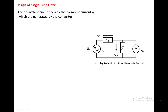Here we are placing the filter. This is the grid, and whenever we consider the grid it has a voltage as well as some internal impedance, that is ZSH — the impedance of the source due to harmonics. ZFH is the impedance of the filter due to harmonics. The current passing through the filter is denoted IFH, and the current passing through the source impedance is ISH.